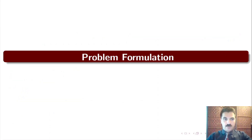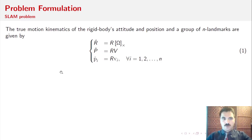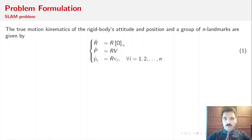Now, let's talk about problem formulation. The true motion kinematics of a rigid body that is moving and rotating in 3D space — or we'll call it attitude and position — as well as a group of landmarks distributed in the environment, can be represented by equation 1.